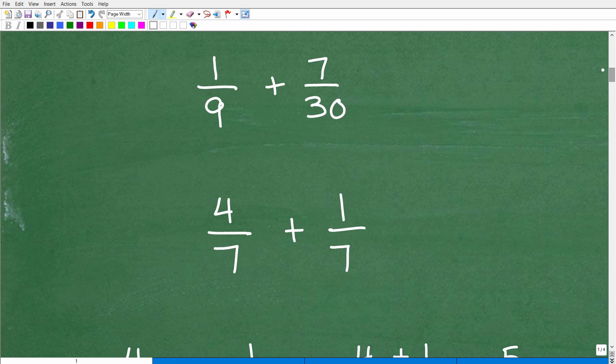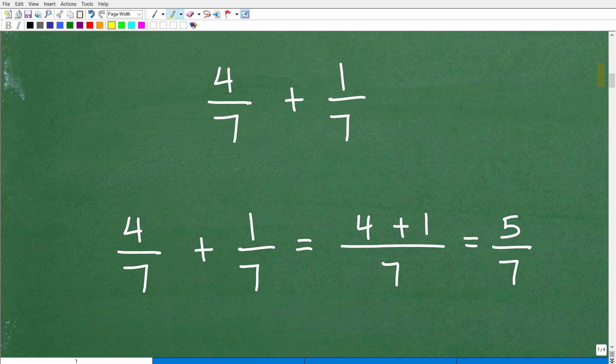Here's the problem: one-ninth plus 7 over 30. We want to add these fractions. When you're dealing with fractions in terms of adding and subtracting, the deal is this: you have to have the same denominator. Here, 9 and 30 are obviously not the same. I can't add or subtract two fractions if they don't have the same denominator. I'm going to have to do some work, and that involves finding the lowest common denominator.